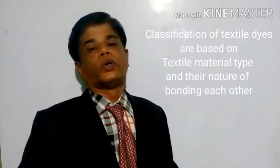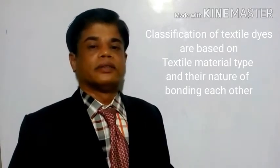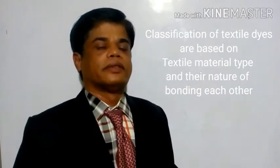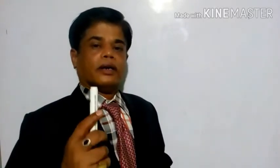Textile dyes are classified according to the textile material going to be dyed or colored. For example, if the fabric or yarn is cotton, then direct dye is selected for that. For polyester, disperse dye is used; for nylon, acid dye is used. Textile materials made of different substances require different chemical structures of dyes.